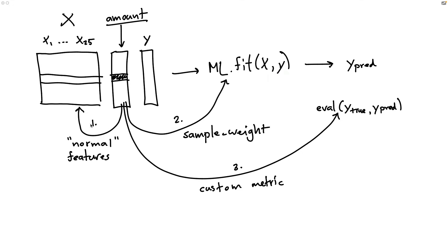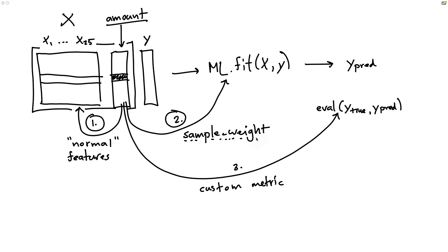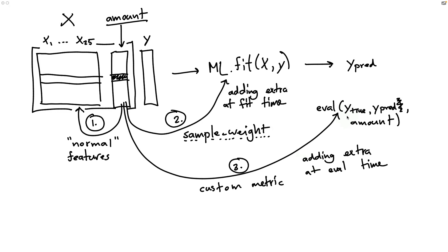When I paint this scene, I hope you might agree that if we are going for route number one, there's very little that really needs to change — we basically would have to concatenate the amount array together with the normal features. But in case number two, we are setting a sample weight, and another way of looking at it is that we're interested in adding something extra at fit time. And similarly, you can also imagine that we would also need something extra at evaluation time.